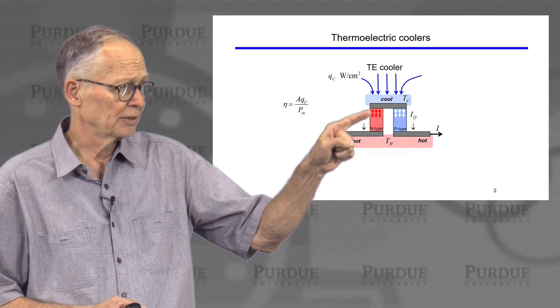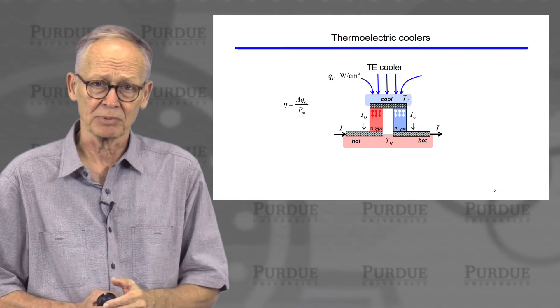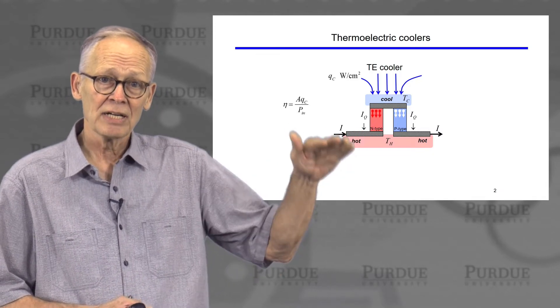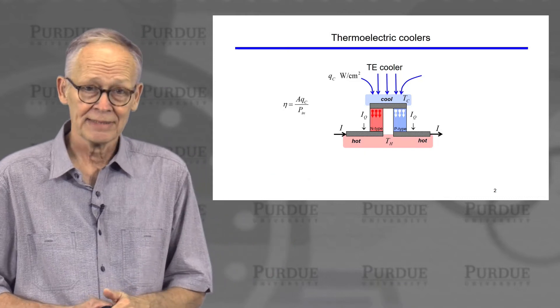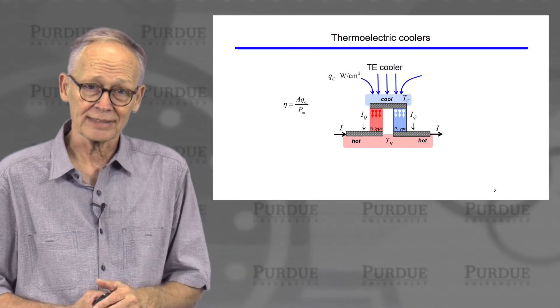Current runs through. The current runs up the N-type leg, across the top, and then down the P-type leg. If you look at the direction that the charge carriers move, they're moving from the top to the bottom. They not only carry charge, they carry their thermal energy at the same time.